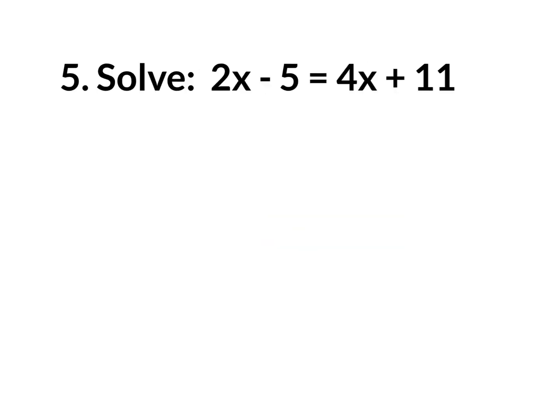Let's move on. This next question has variables on both sides — that's the only thing; it's still simplified. There is no distributive property, no combining like terms on either side, so move on to getting x by itself on one side of the equal sign. The problem is you have x's on both sides. You either get rid of the 2x or the 4x — it doesn't really matter. I'm going to get rid of the 2x by subtracting 2x, and what I do to one side I do to the other.